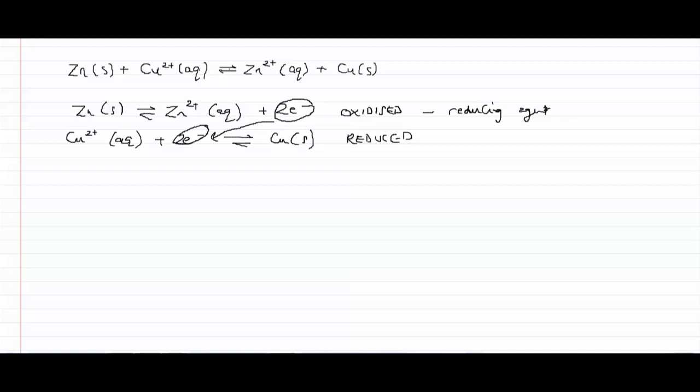You'll notice this is an equilibrium reaction. So an alternative would be to consider the reaction in the opposite direction. So you'd have zinc 2+ here and copper going to zinc and copper 2+.